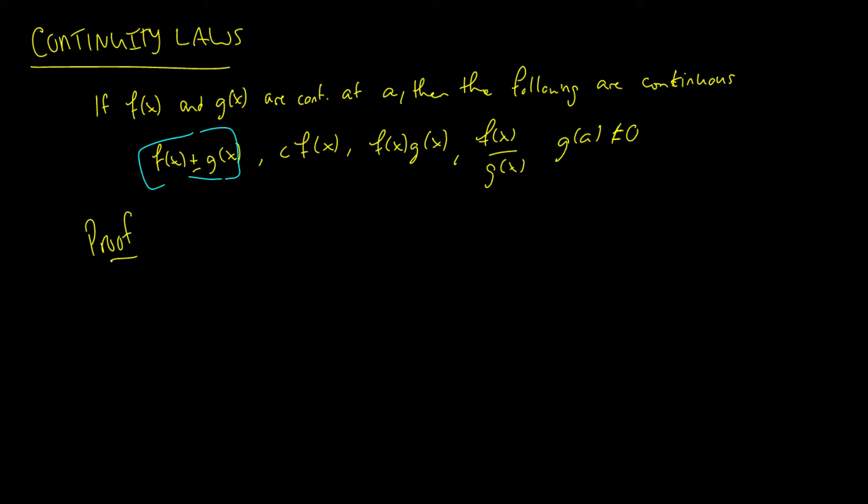f and g are continuous, so we can say that the limit as x approaches a of the function f plus g at a point x is equal to the limit as x approaches a, and we're going to distribute f and g into their own functions. We can say f(x) plus g(x) which is going to equal the limit as x approaches a of f(x) plus the limit as x approaches a of g(x), and we know this because of the limit laws we learned in a few videos back.